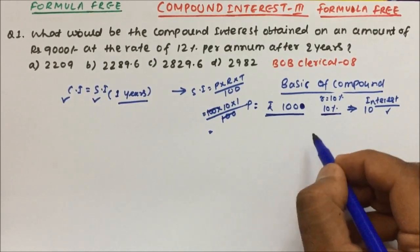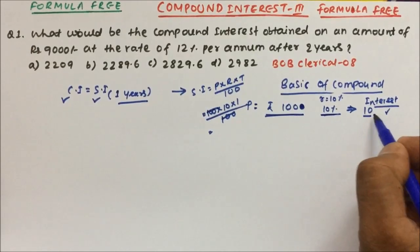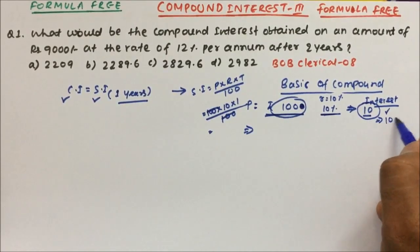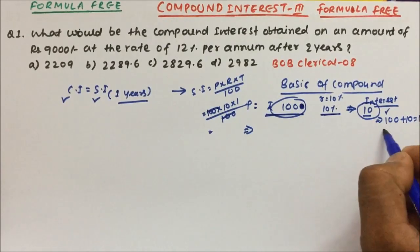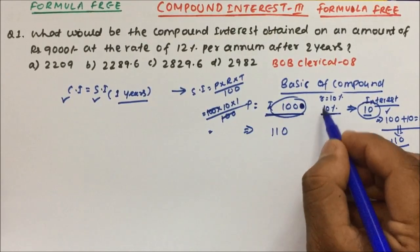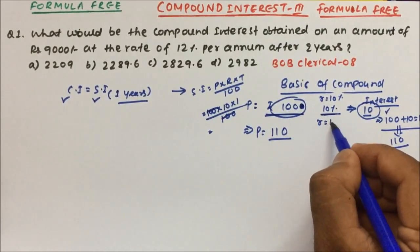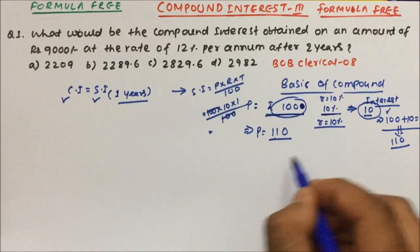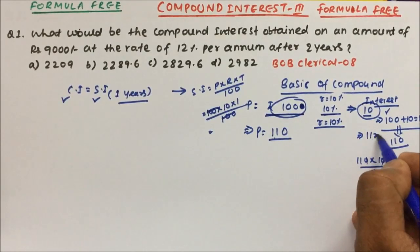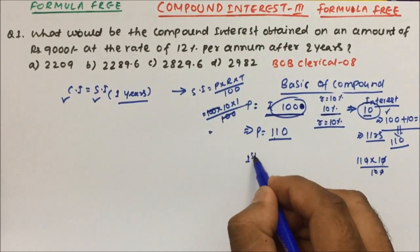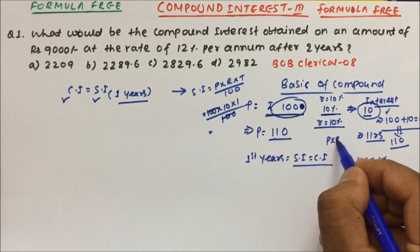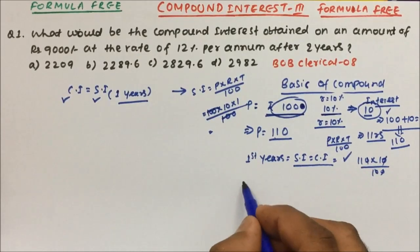If you have to calculate interest for two or three years, here's how it works. The first year we got 10 rupees interest. For the next year, the principal and interest get added — so 100 plus 10 is 110 rupees. This 110 is invested for the next year. At 10 percent, 10 percent of 110 is 11 rupees — so the second year interest is 11 rupees.